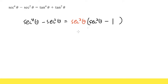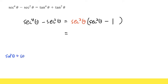Now, here is the part where we have to know the identities really well. I'll leave the factored expression for now and focus on what we can do with the secant squared theta minus one inside. Let me work something out. We first know the famous Pythagorean identity: sine squared theta plus cosine squared theta equals one.